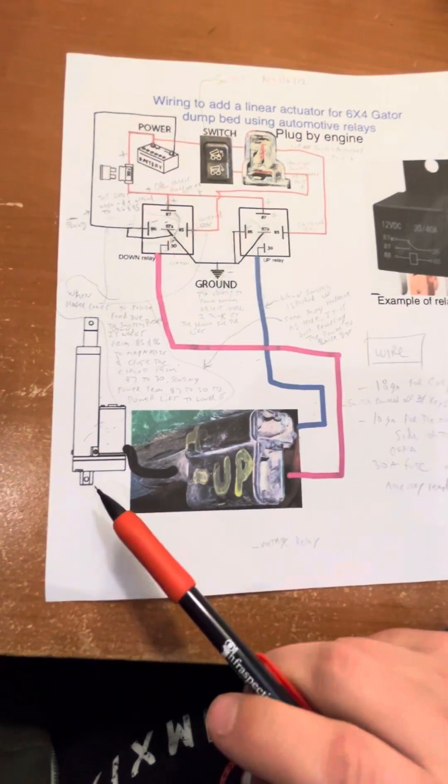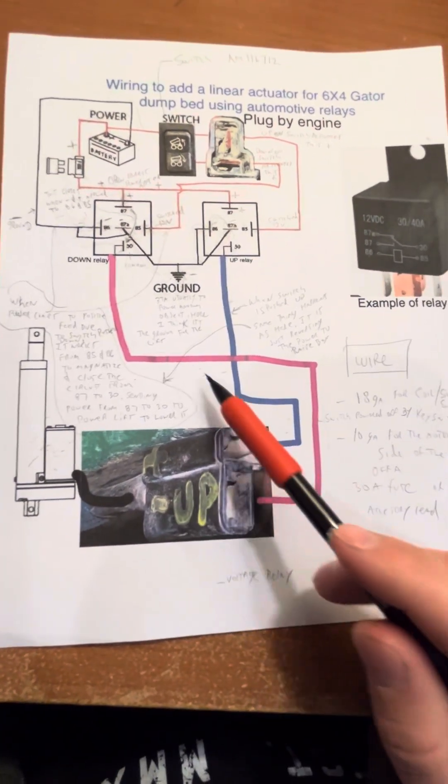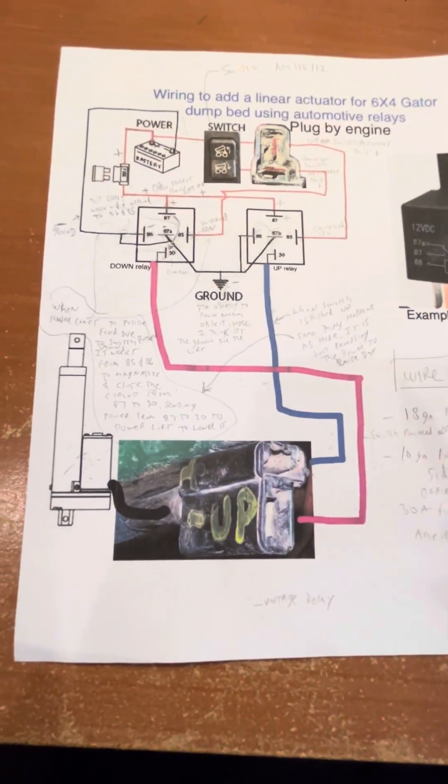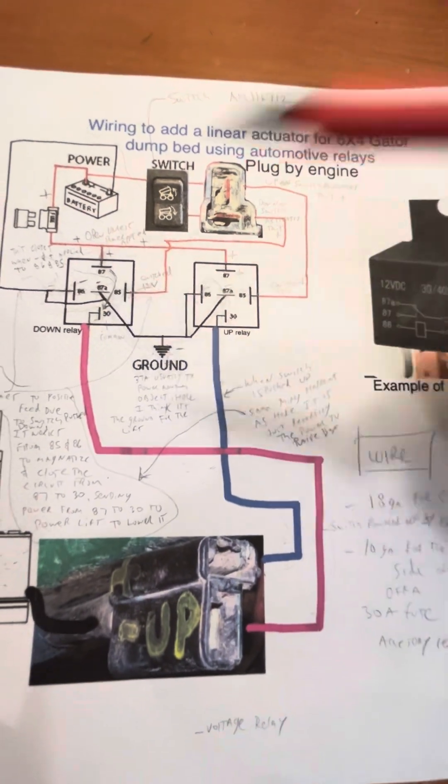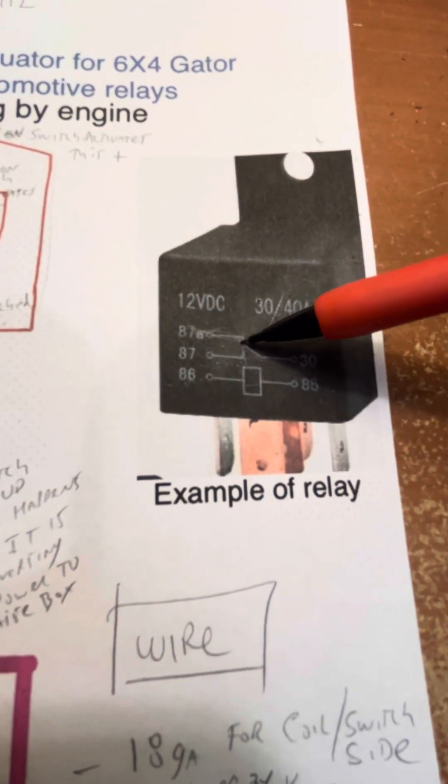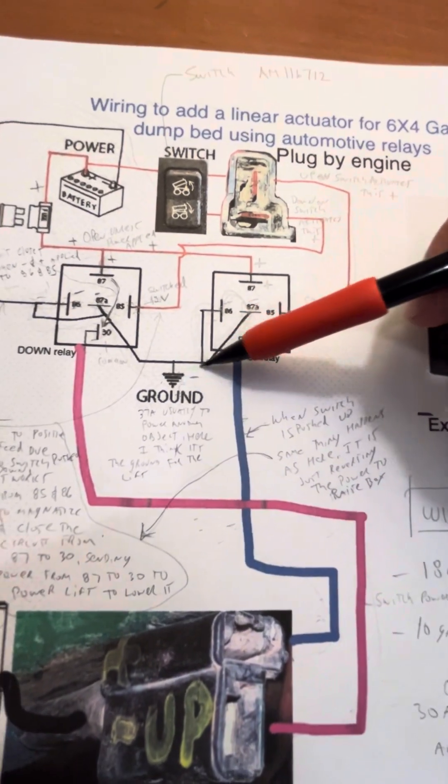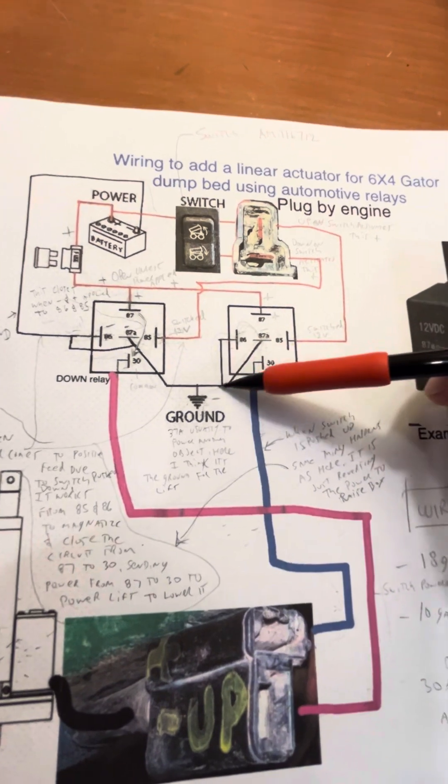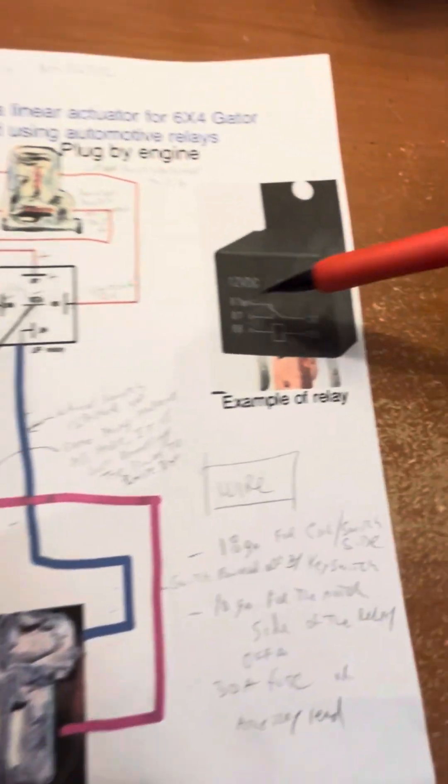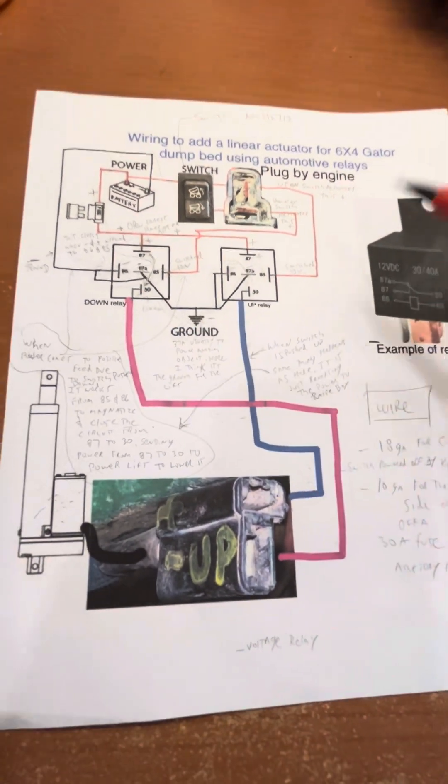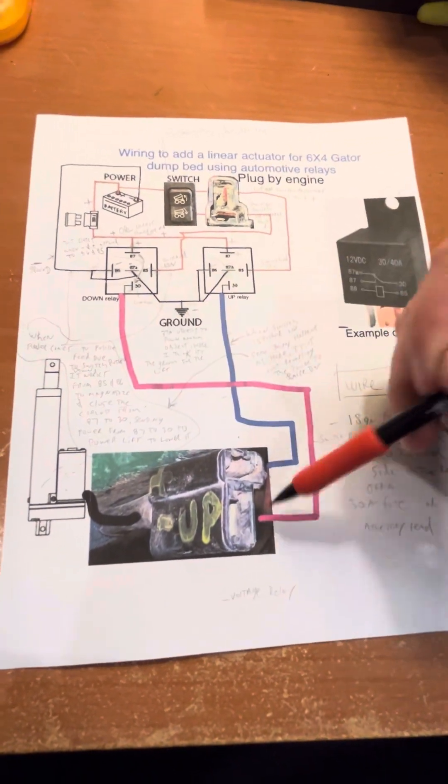Now, the next question I had was, okay, if this only has two wires and both of these are essentially positive, how the heck, where does it get its ground? So the answer to that question is this fifth pin. So what you'll find is that when nothing's happening, 87A is going to 30. Okay, so 87A, you see we have ran as a ground. So when we're not pressing the button, 87A goes to 30 is the ground. So while nothing's happening, this wire is ground and this wire is ground.